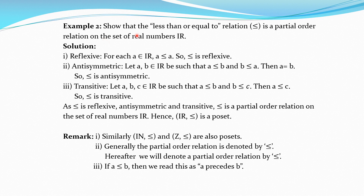Similarly, the less than or equal to relation is a partial order relation on the set of real numbers R. In the same way we can show it is a partial order relation. N with ≤ and Z with ≤ are also posets. Generally, the partial order relation is denoted by the ≤ symbol. But hereafter, instead of reading it as 'A less than or equal to B', we read this as 'A precedes B'.